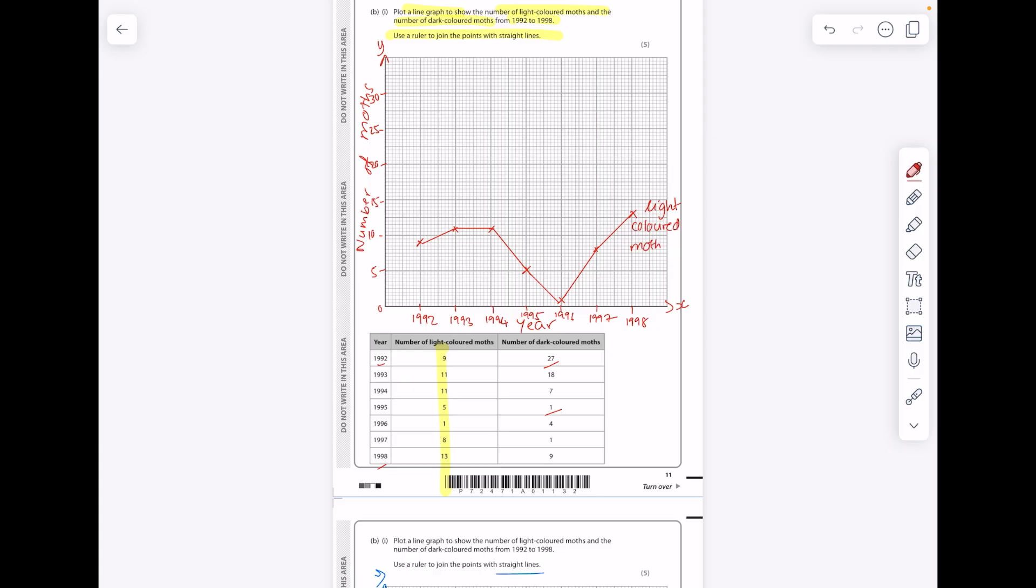I'll just swap colors so you can see my next points nice and clearly. For dark-colored moths now, 27 for 1992, 18 for 93, 7 for 94, 1 for 95, 4 for 96, down to 1, and then up to 9. Join the dots again. And these are your dark-colored moths.